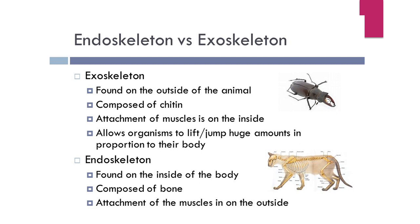On the other hand, the endoskeleton is found on the inside of the body, composed of bones. The attachment of the muscles is on the outside — their muscles are attached to the outside of the skeleton. Look at this cat: the skeleton is inside and the muscles are outside, while in the exoskeleton, the skeleton is outside and the muscles are inside. Humans also have an endoskeleton. Thank you.